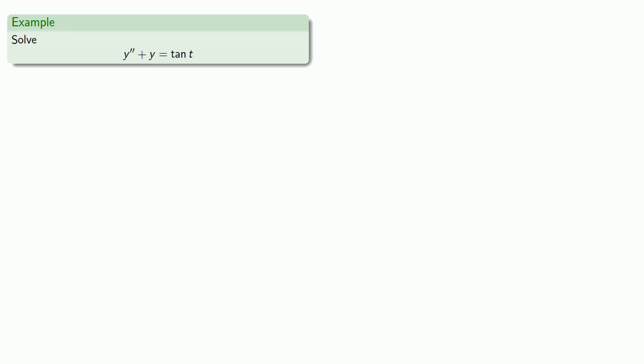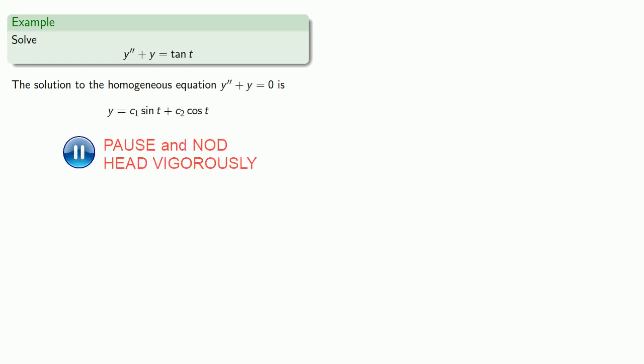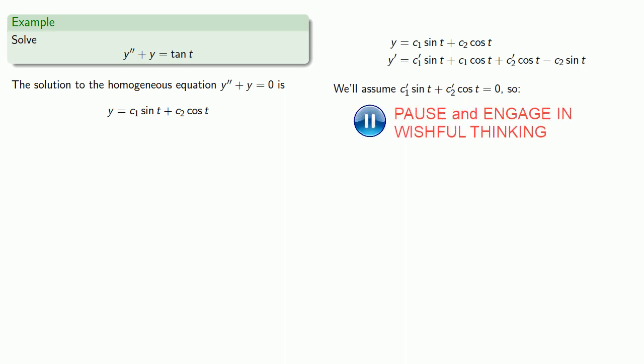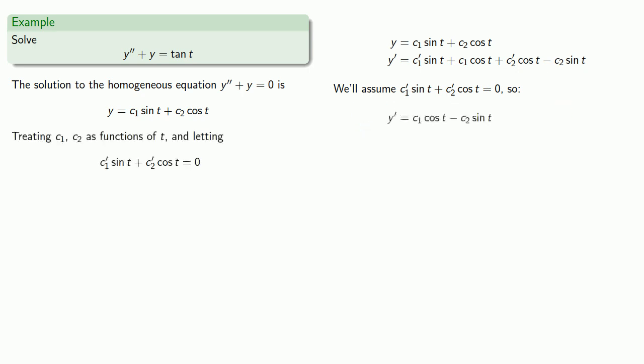The solution to the homogeneous equation is going to be c1 sine t plus c2 cosine t. We'll treat c1 and c2 as functions of t so y prime is going to be... But we'll assume c1 prime sine plus c2 prime cosine is equal to zero. And that simplifies our equation.